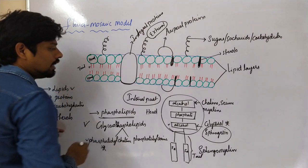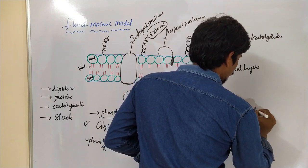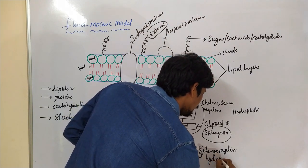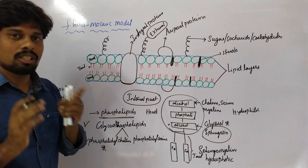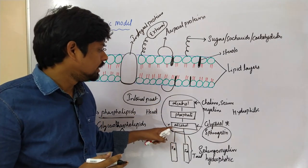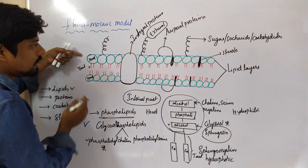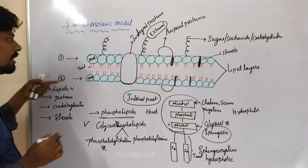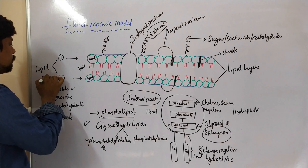The head contains a property called hydrophilic. The tail — the fatty acids — has hydrophobic nature. This tail-like structure forms layer 1 and layer 2. Two layers adjacent to each other form the lipid bilayer.